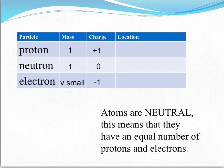All atoms are neutral. This means that they must have an equal number of protons and electrons, so that the number of positive charges on the protons is exactly cancelled out by the number of negative charges on the electrons.